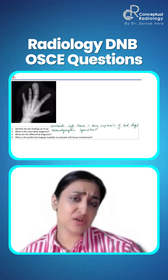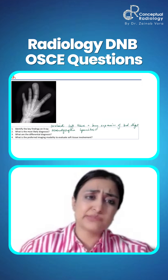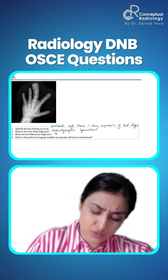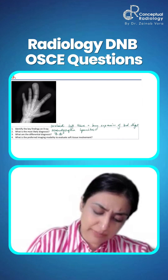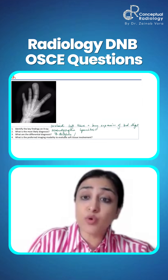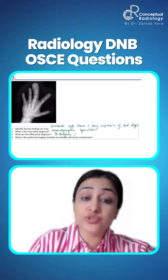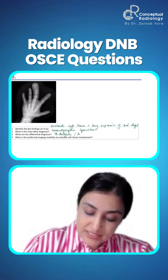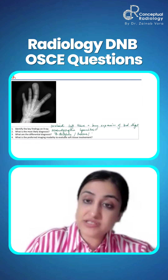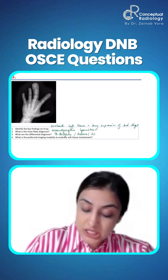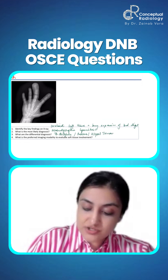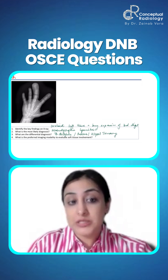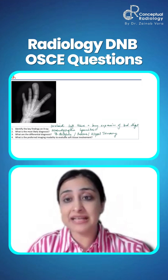TB dactylitis? Okay, but that will not cause soft tissue thickening so much. Can we keep diffuse overgrowth syndromes like Proteus syndrome? Tell me hypertrophy syndromes. Klippel-Trenaunay syndrome. Spina ventosa, TB dactylitis.